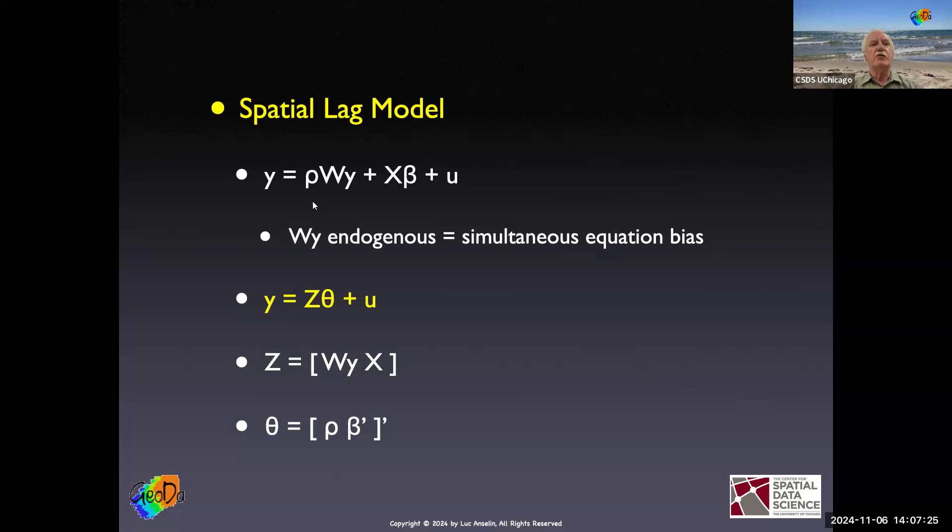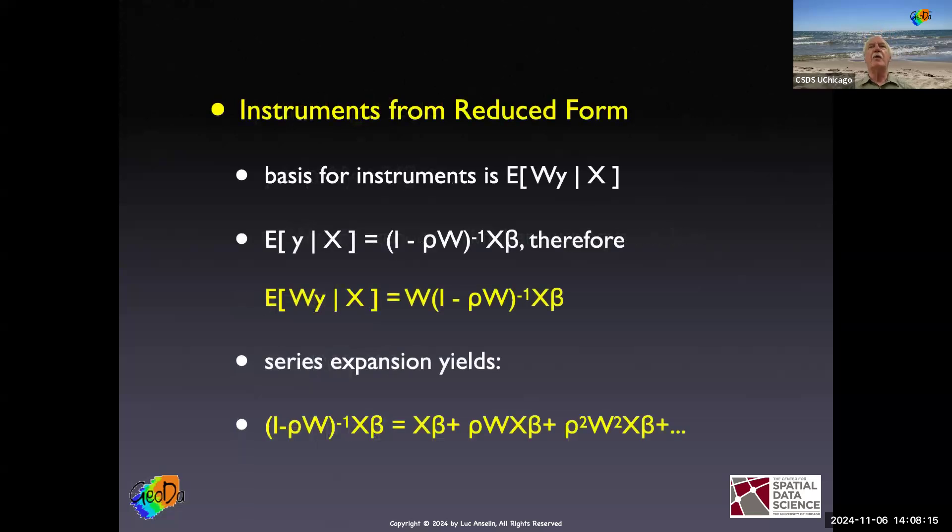We write the spatial lag model the usual way, but we organize parameters a little bit, where now Z contains both the spatially lagged dependent variable and X. And then theta is the parameter vector, which is rho, the spatial autoregressive coefficient, and beta. So they're both in here. These transposes are just to make sure it's all lined up properly, but essentially, we're combining everything together. And now we're back in business, because if you go back to our two-stage least squares notes, it's exactly the same expression. So what we need is a Q, a set of instruments, and then we have the whole same rigmarole as before. The problem is, what are the instruments?